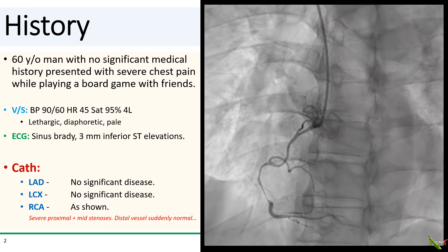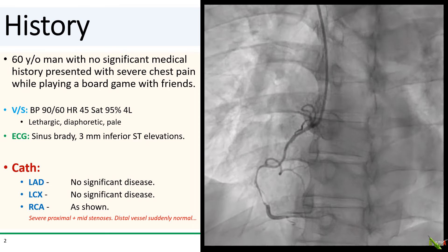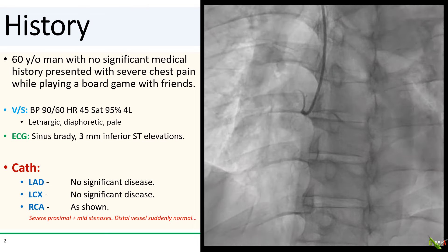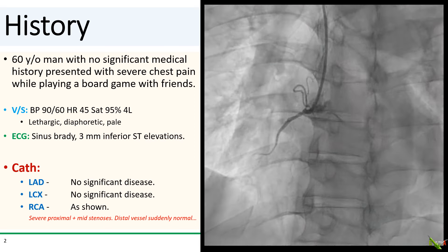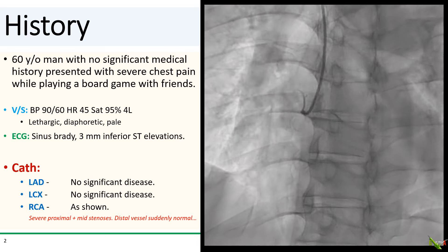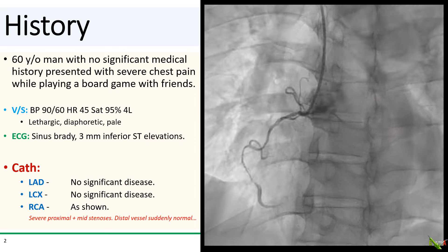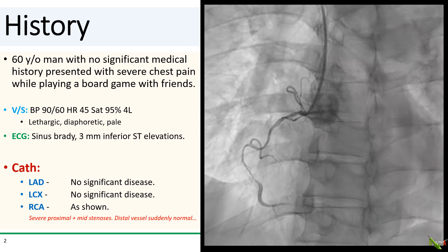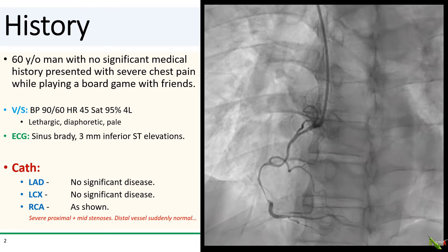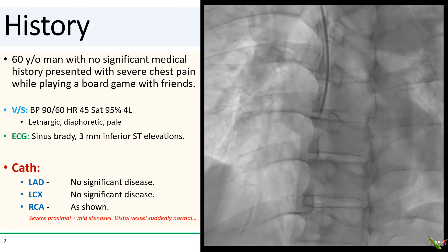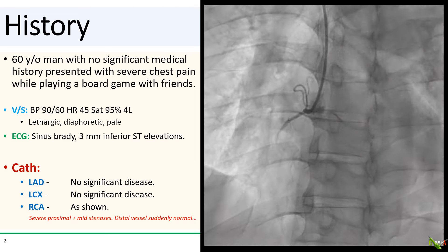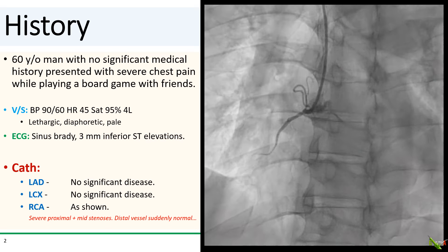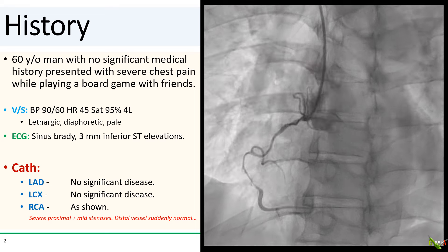ECG showed sinus bradycardia and there were three millimeters of ST elevations in the inferior leads with reciprocal ST depressions in the anterior leads. On cath, the LAD and circumflex both looked fine. The RCA looked a little strange — there is a long segment of disease from the proximal to mid-distal RCA, a focal segment of critical subtotal occlusion, but the RCA then suddenly reconstitutes itself just distal to that. The distal RCA looks basically normal. While it's a little unusual for a 60-year-old man, this does have the look of SCAD.